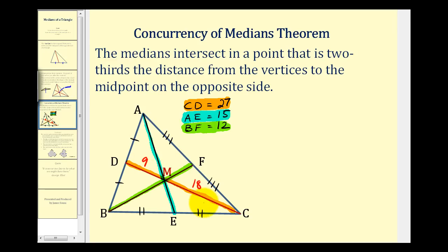So this is another property that this theorem tells us. If we know that segment AE has a length of fifteen units, then AM would be two-thirds of fifteen, that would be ten, leaving one-third the total length for ME, so that would be five.